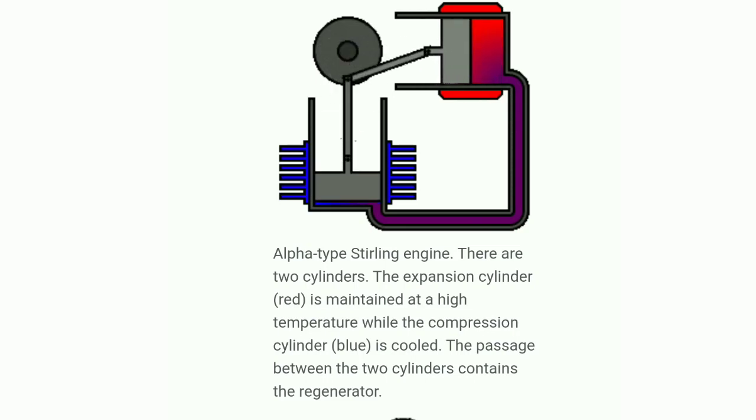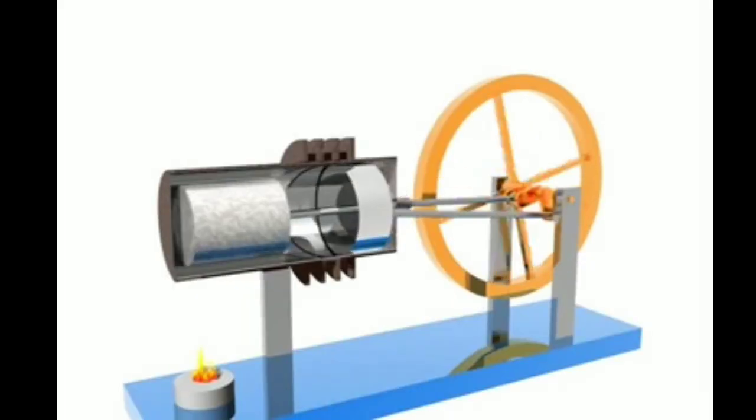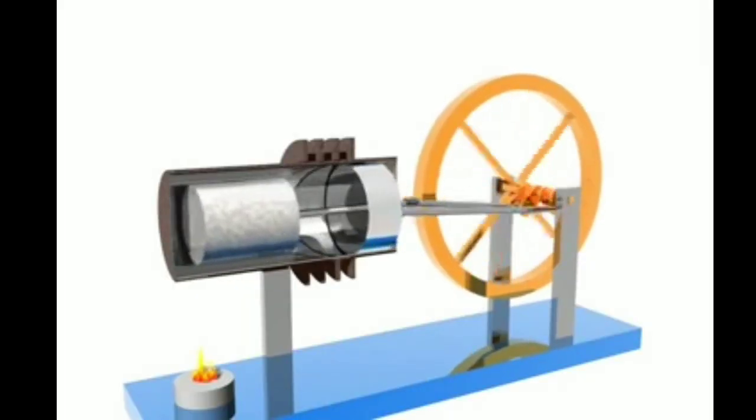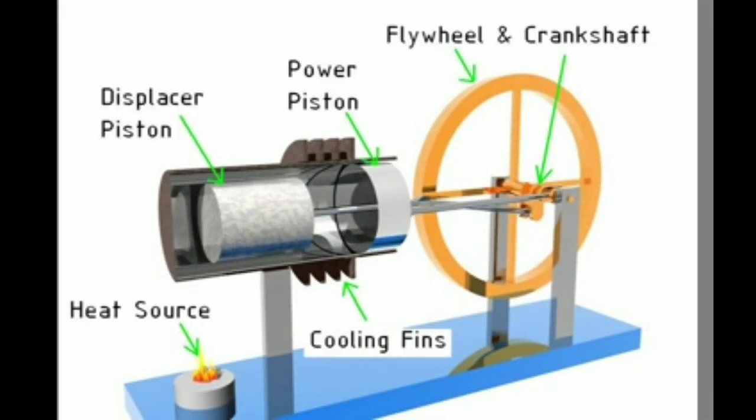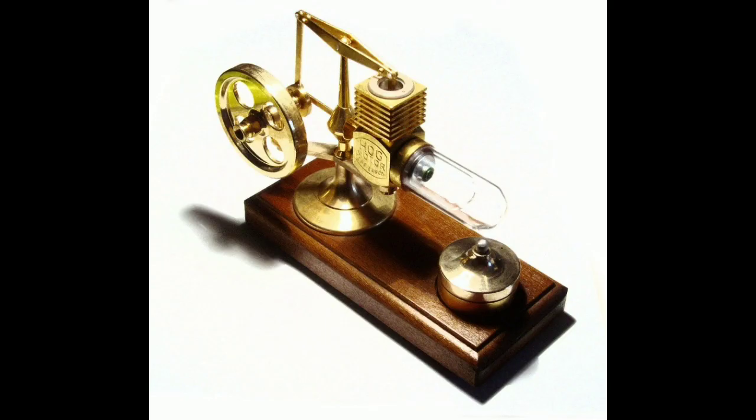This process is a continuous running process. Next is the beta type. This has one cylinder but two sections. This is the base for heat and for cooling. There are fins for heat dissipation and cooling.